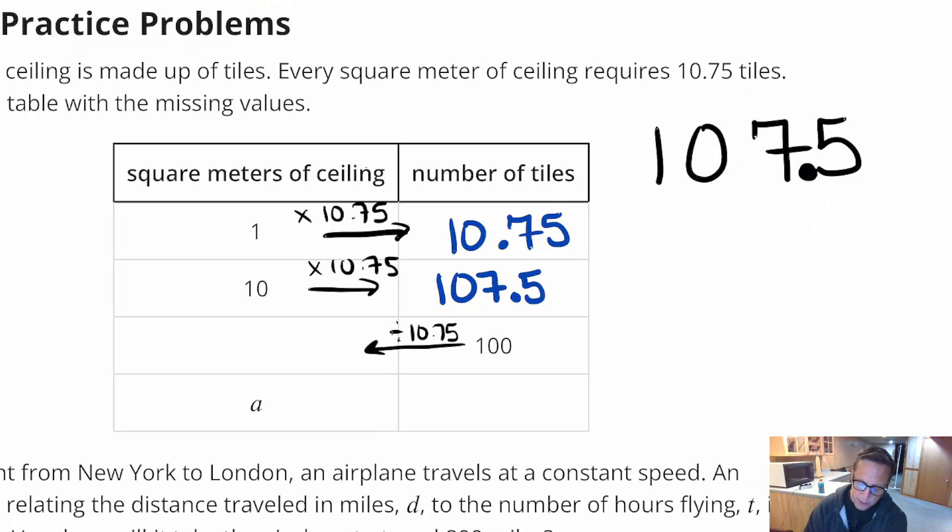Okay, and then the other one, I'm going to use my calculator for this one, and I'm going to do 100 divided by 10.75. That comes out to a really long decimal, and it's like a 9.3023. I'm just going to round it, so it's approximately 9.3 square meters.